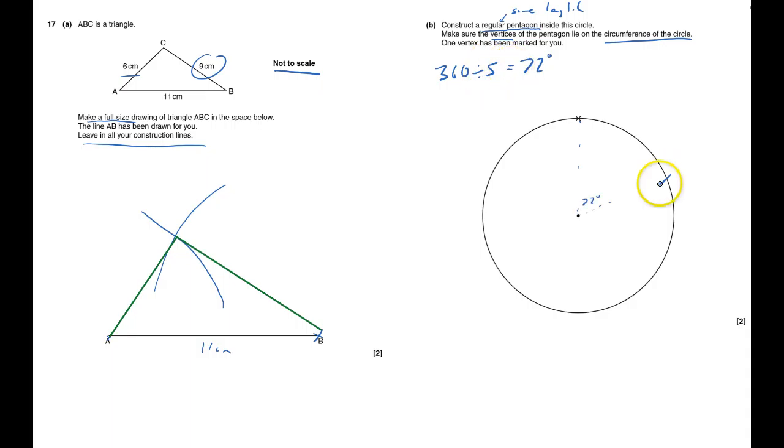So I need to measure the angle at 72 degrees here and put a mark on the corner on the edge there. And then do the same, measure around another 72 degrees, put across there, another 72 degrees, put across there, and finally another 72 degrees and put across there.